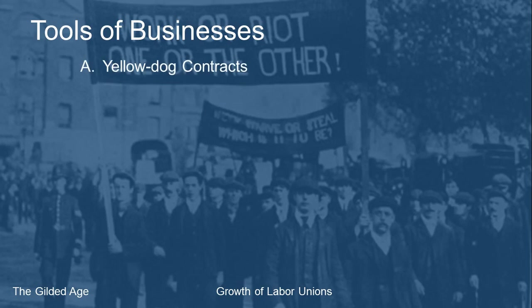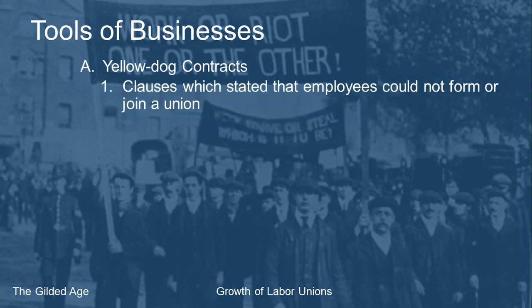Unions had tools, but business had more tools to fight labor. Businesses would get workers to sign yellow dog contracts — clauses inside employment contracts specifically stating that the employee was not allowed to join or form a union. That was grounds for termination; if they found you doing these things, they could fire you on the spot.